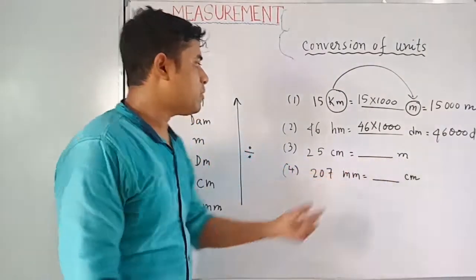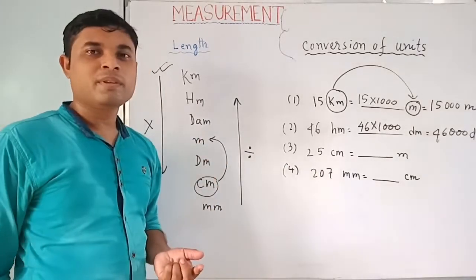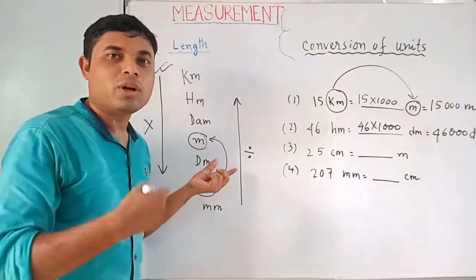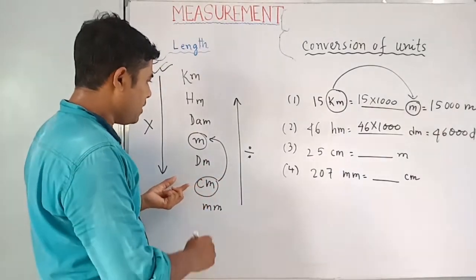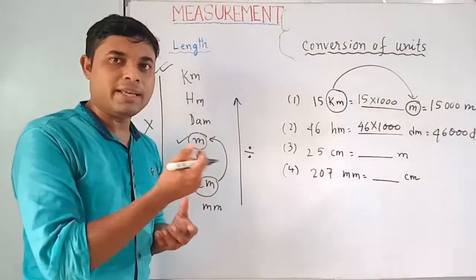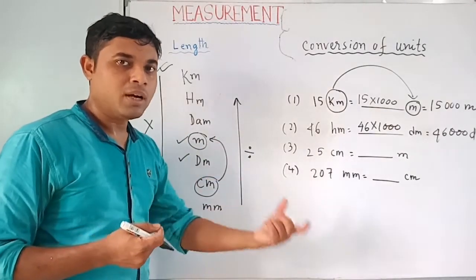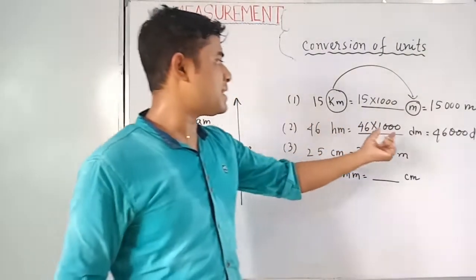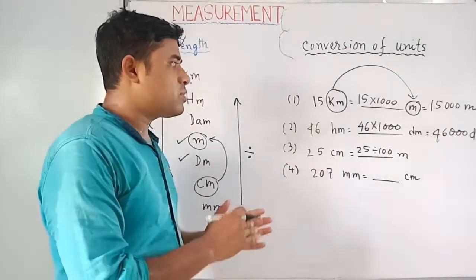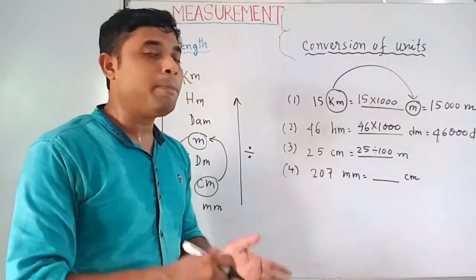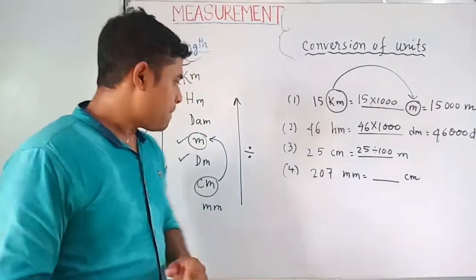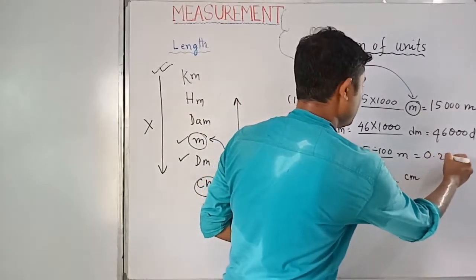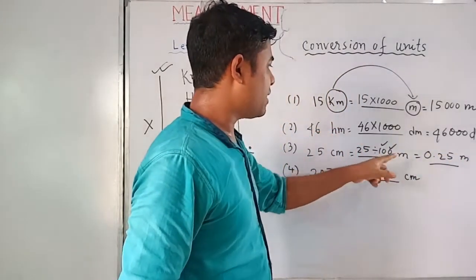Now convert centimeters into meters — you are moving from lower unit to higher unit, so division. Count the steps: 1, 2 — two places, so divide by 100. For 25 centimeters: 25 ÷ 100 = 0.25 meters. The number of zeros behind 1 equals the number of places moved. Two decimal places here.